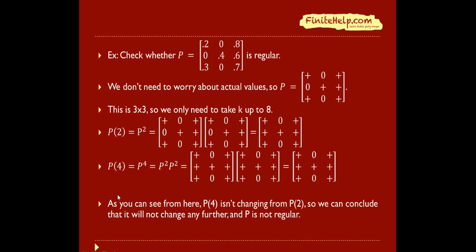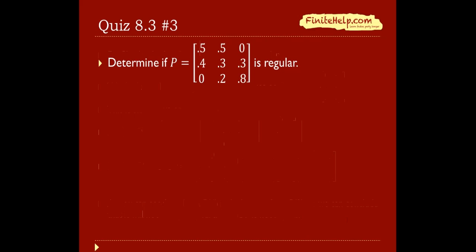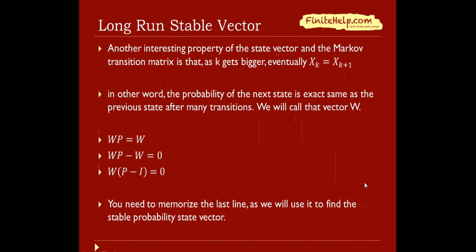Technically, you'll actually have to take P4 times P4 to get P8. But here's a trick that can save you some time. You can look at P2 and P4 and see that they're the exact same thing. So P4 isn't changing from P2. If you take P4 times P4 and get P8, you're going to get the exact same thing. We can conclude that it will not change any further, and P is not regular, because the zeros never go away.